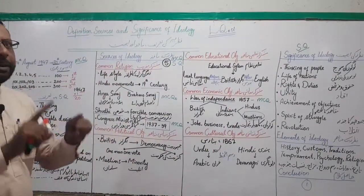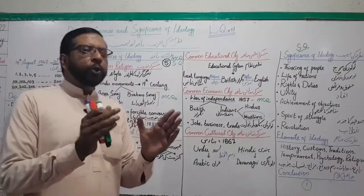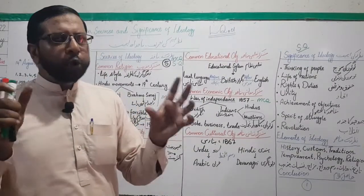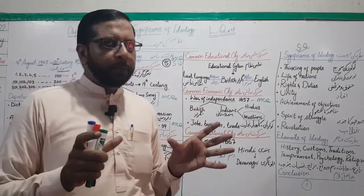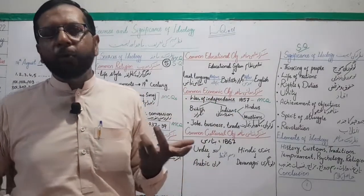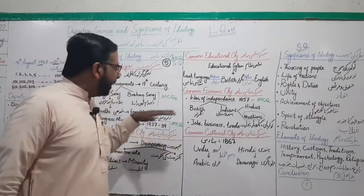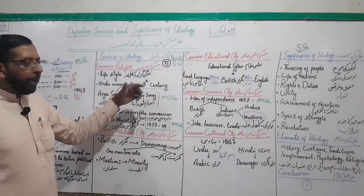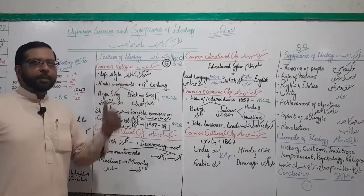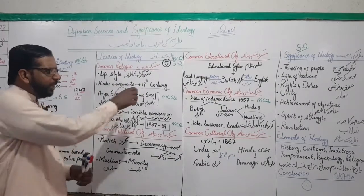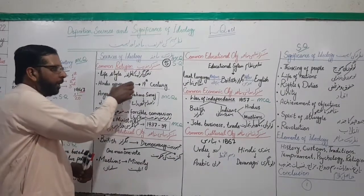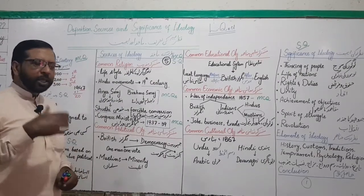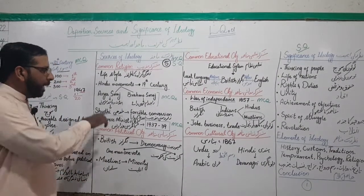Ab subcontinent mein consider karein toh Hindu aur Musalman yeh do bade religious groups the — Hinduism and Islam, yeh do bade religions the. In the 19th century, some Hindu movements were started in the subcontinent — unneeswein sadi mein bare sagheer mein kuch Hindu tahreekein shuru hui, jinmein se do ka naam aapki book mein mention kiya hua hai: Arya Samaj and Brahmo Samaj.